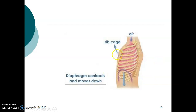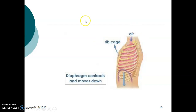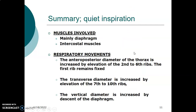So in summary: anteroposterior diameter is the pump handle mechanism, causing the sternum to move outwards and upwards. Vertical diameter is increased by lowering the diaphragm during inspiration. Transverse diameter is the bucket handle, where the ribs are usually downwards and forwards but during inspiration are brought upwards and outwards. All these increase the volume of the thoracic cavity, reducing pressure, making atmospheric pressure higher than thoracic pressure, leading to air entering the lungs causing inspiration.